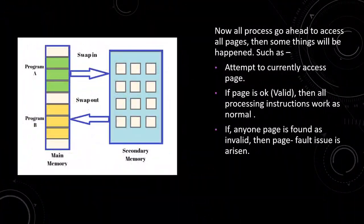Now when a process goes ahead to access all pages, certain things will happen, such as an attempt to access the current page. If the page is valid, then all processing instructions work as normal. If any page is found as invalid, then a page fault issue is raised.